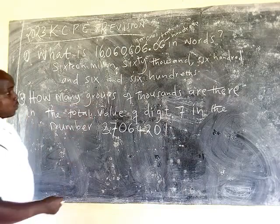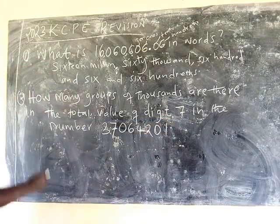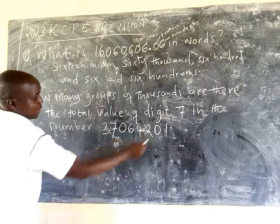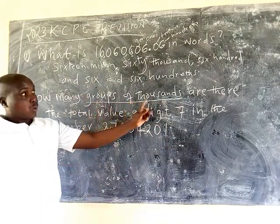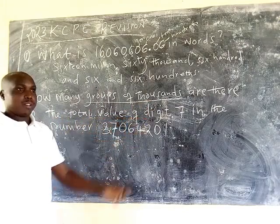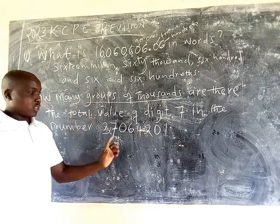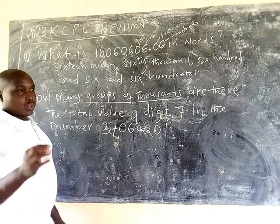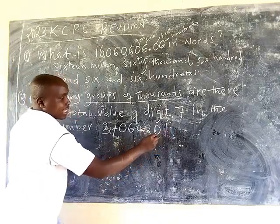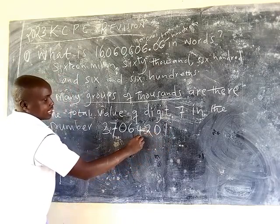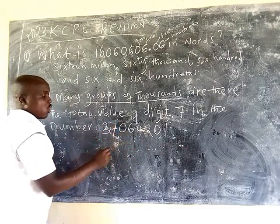How many groups of thousands are there in the total value of digit 7 in the number 3,706.4201? The keyword here is 'how many groups of thousands are there in the total value of digit 7.' Remember, the place value of a number is the position where that digit is. So we start here: ones, tens, hundreds, thousands, ten thousands, hundred thousands, one million. Therefore the digit 7 is in the place value of one million.